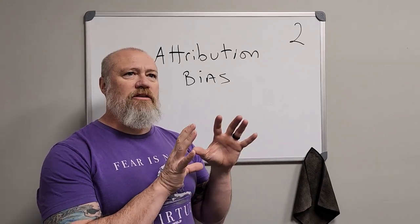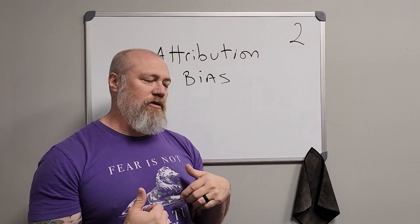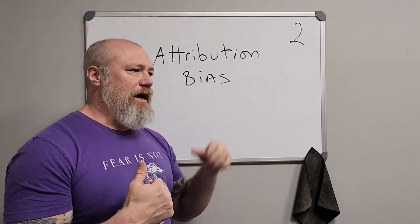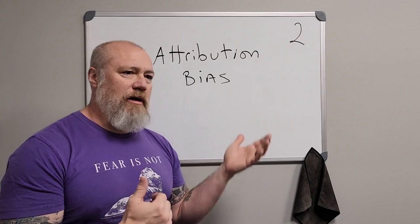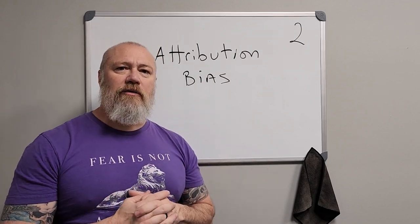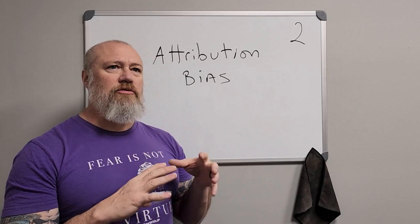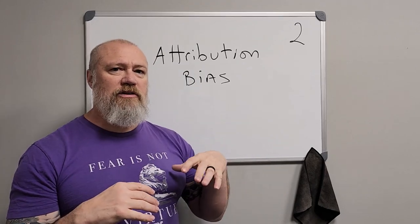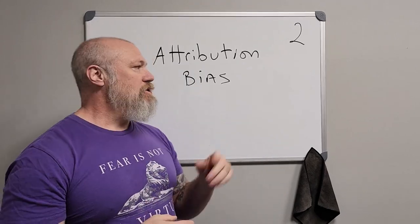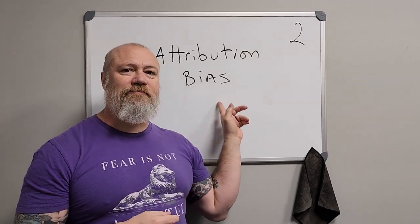So to combat attribution bias, try to give everybody the benefit of the doubt — even yourself. Be aware: am I making this judgment based on my situation, or aspects of my character? So number two: attribution bias. Try to keep that in mind.